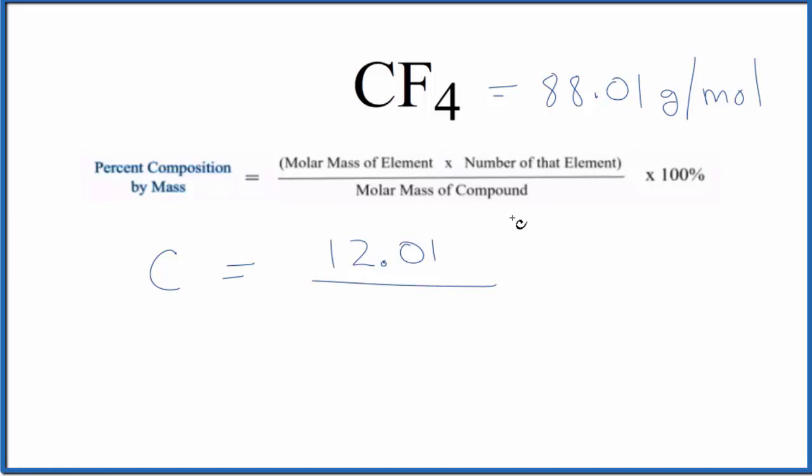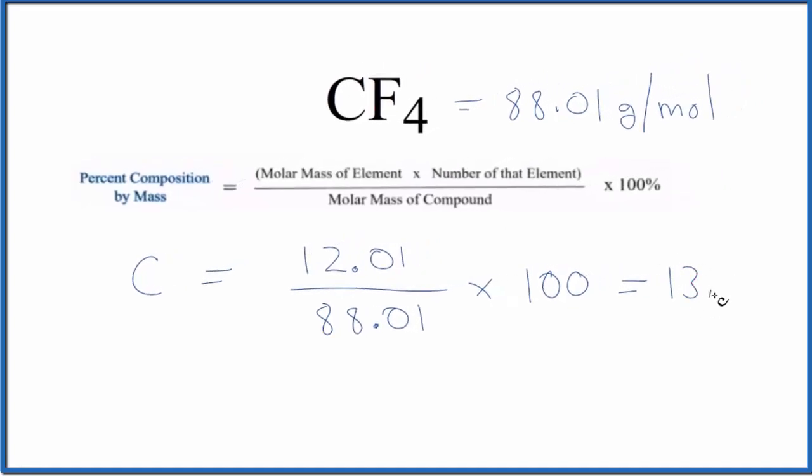Then we have our molar mass here of 88.01 grams per mole. The units cancel out. We multiply by 100 to get a percent, and the percent composition by mass for carbon in CF4 is 13.65%. Then we do the same thing for fluorine.